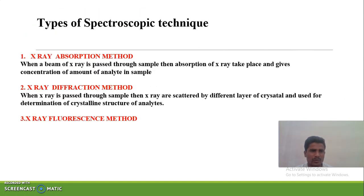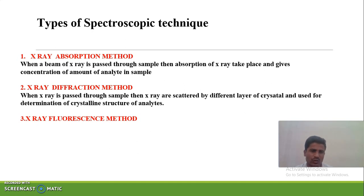There are three types of X-ray spectroscopic techniques: X-ray absorption method, X-ray diffraction method, and X-ray fluorescence method. In X-ray absorption, absorption of X-rays takes place. In X-ray diffraction, diffraction of X-rays takes place. In X-ray fluorescence, whenever electrons interact with the metal target, electrons are emitted from the ground state to the excited state, and when they return to the ground state, they emit fluorescence — meaning the metal target has the property to emit fluorescence.